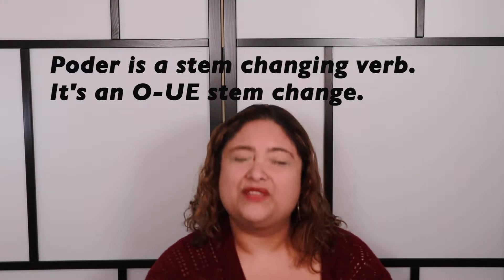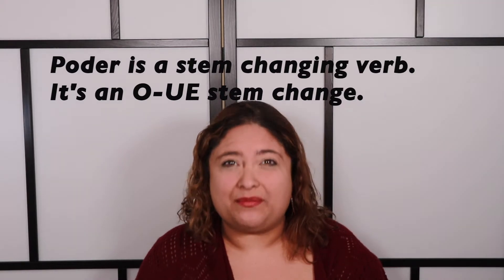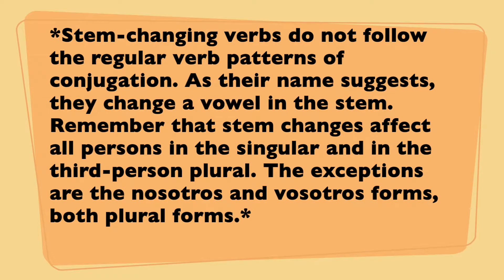The verb poder is actually a stem-changing verb. This will be an O to UE stem change. Now, stem-changing verbs are not necessarily irregular verbs — we're just essentially adding an extra step. I will have another video very soon in my verb conjugation series on how to work with the different types of stem-changing verbs.